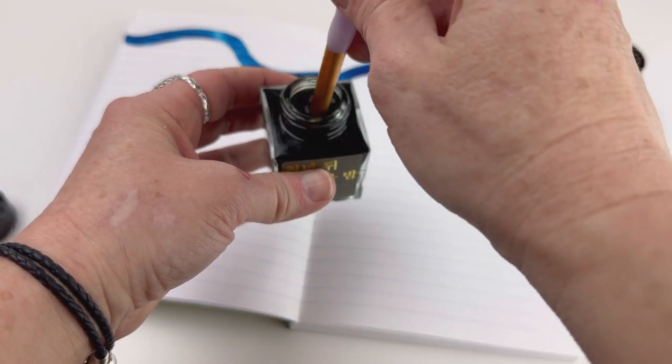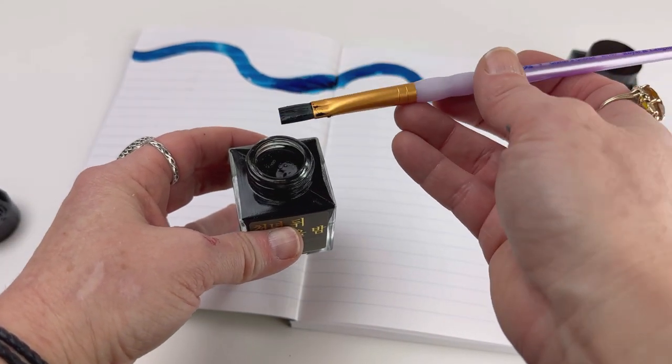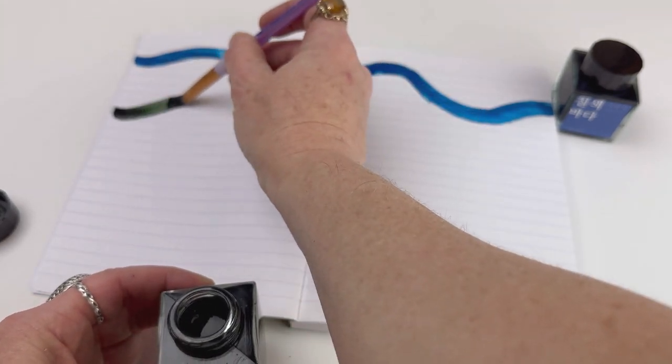This next ink is called The Autumn Night After a Thousand Years and it's a glistening ink, so let's see how that goes down.